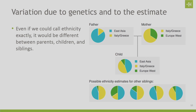One other thing to think about when you look at your ethnicity and compare it with your siblings or parents: even if we could do ethnicity estimation perfectly, that wouldn't mean you would have the same ethnicity as your siblings. Because of how genetic inheritance works, you only get half of your mom's DNA and half of your dad's DNA. That means you have different DNA than your siblings, and so even if we called it perfectly, you would expect some variation in ethnicity estimates between you and your siblings.